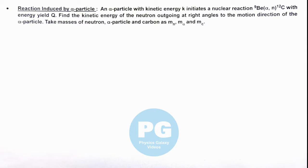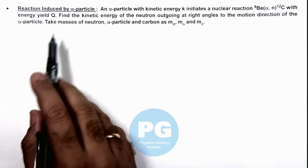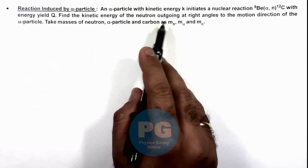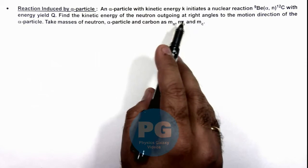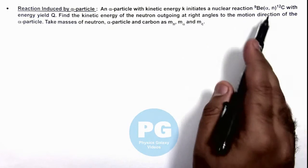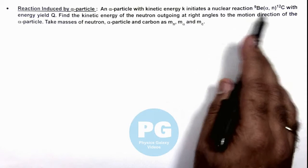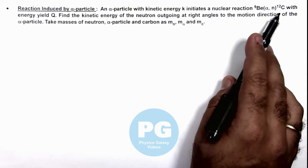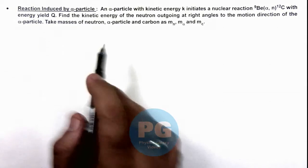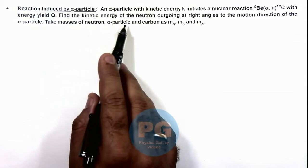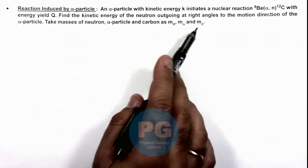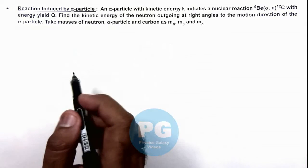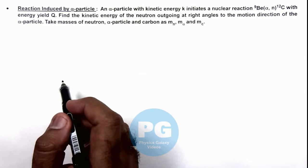In this illustration we'll discuss a reaction induced by an alpha particle. We are given that an alpha particle with kinetic energy k initiates a nuclear reaction where the alpha particle attacks on beryllium and a neutron moves out. The residual nucleus is carbon with energy yield q. We are required to find the kinetic energy of the neutron outgoing at right angles to the motion direction of the alpha particle, and we are given the masses of all particles in the reaction.